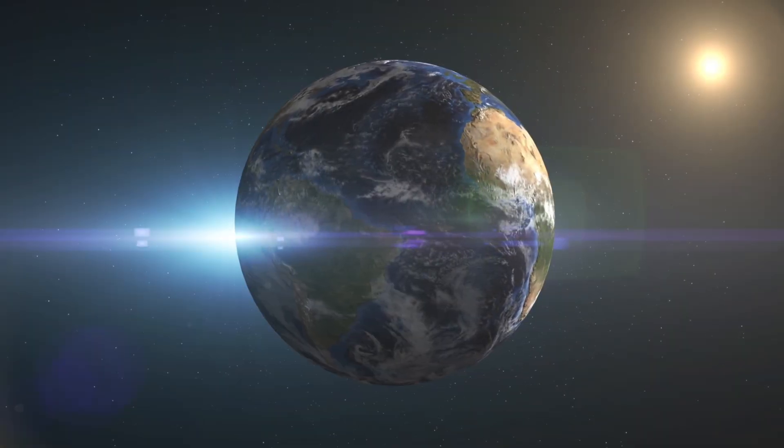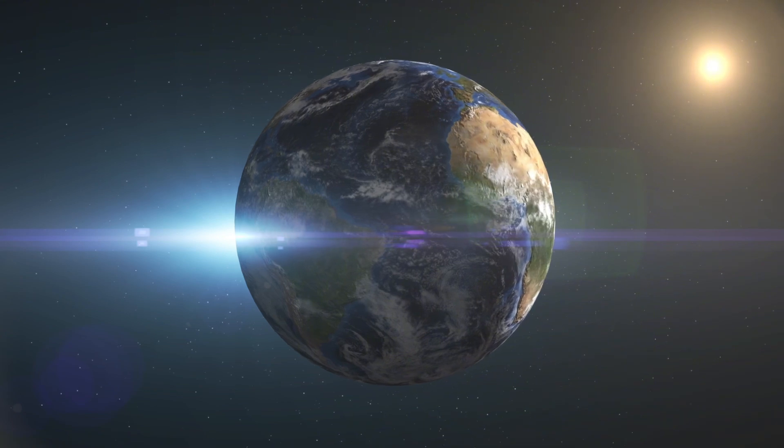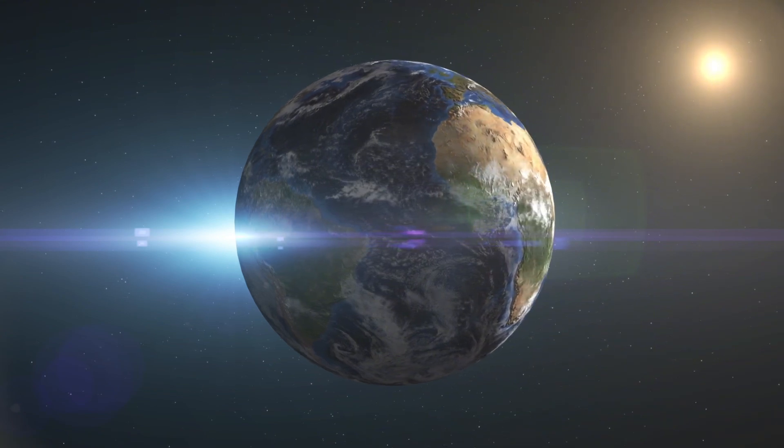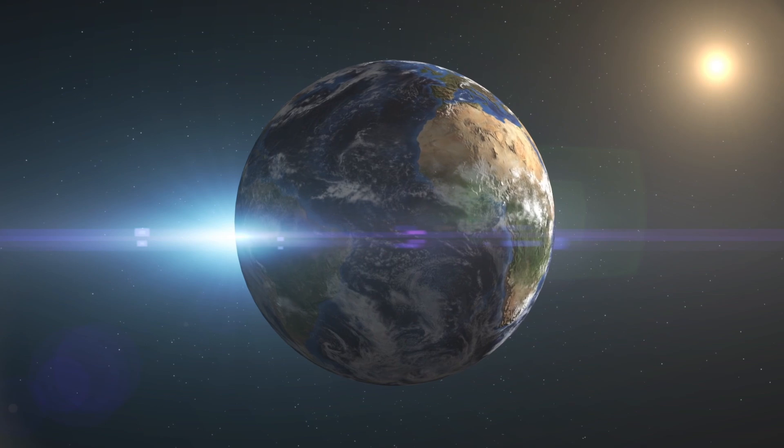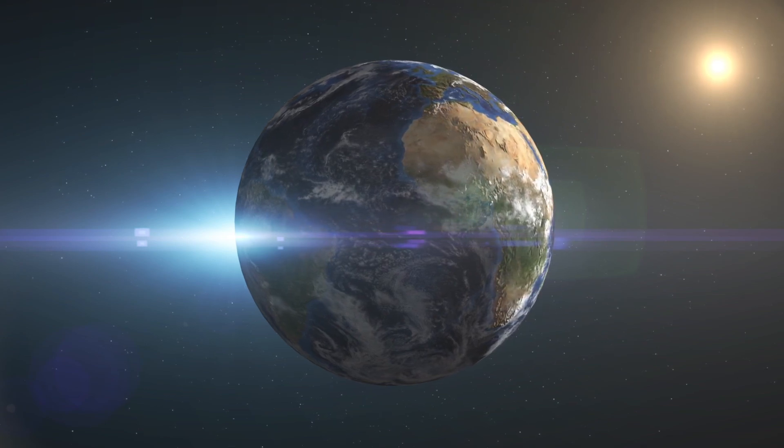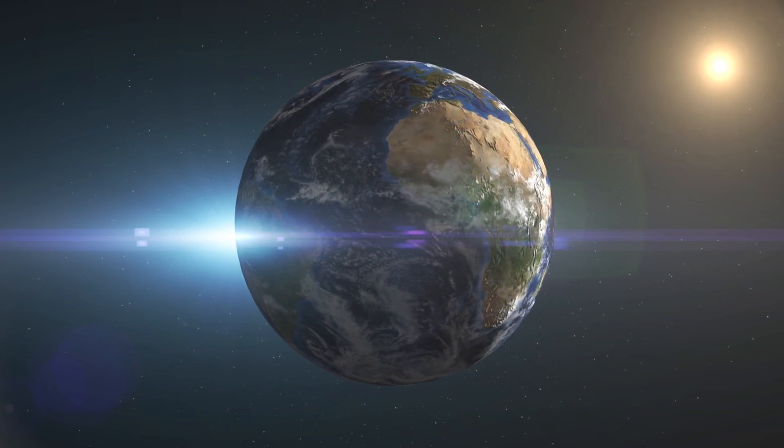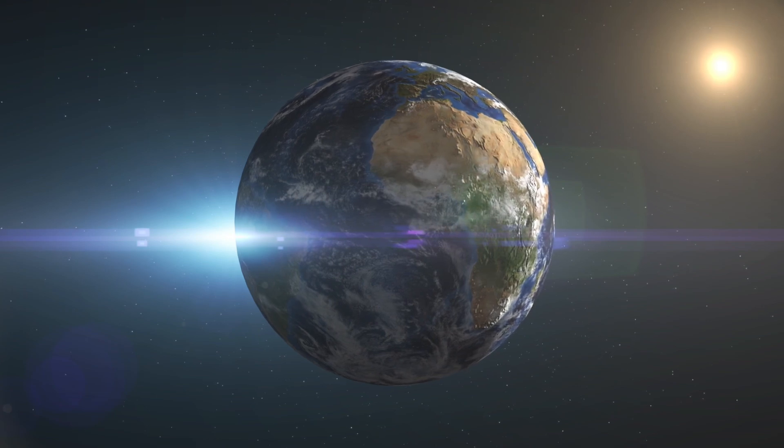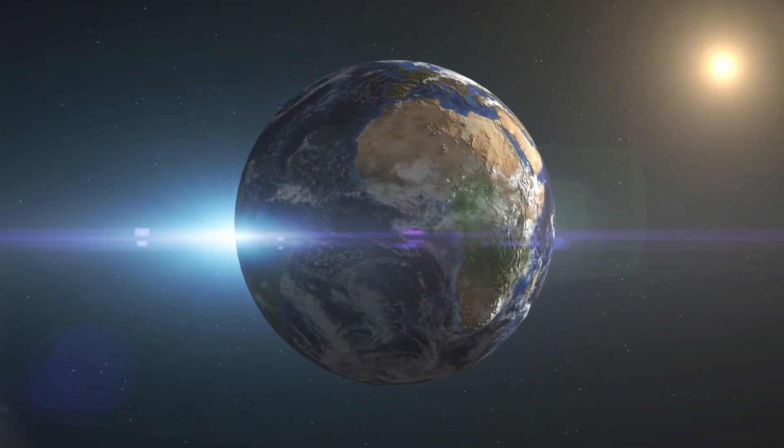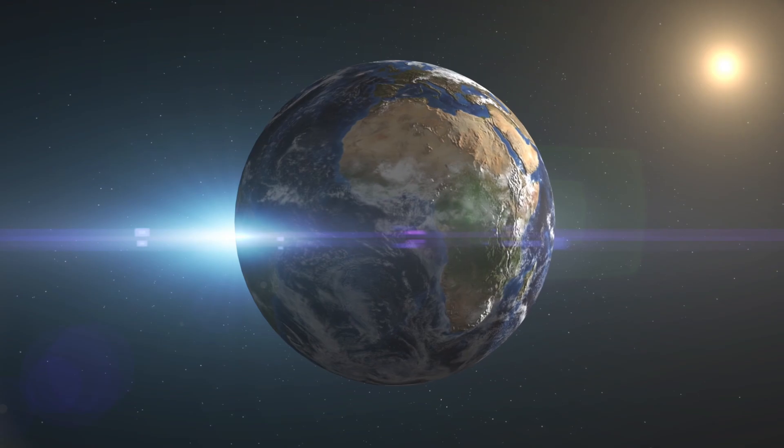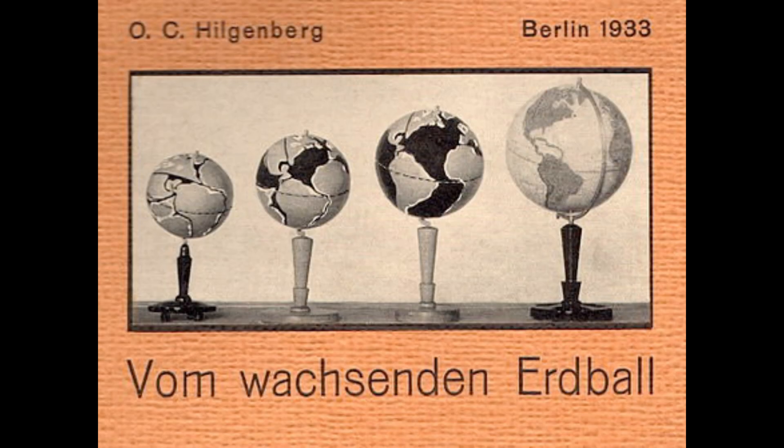The Expanding Earth Hypothesis, while ultimately rejected by mainstream science, has taken various forms throughout history, each with its own unique set of assumptions and explanations. One version suggests that the Earth's volume has been increasing over time while its mass has remained constant, implying that the Earth's density has been decreasing, a notion that challenges our understanding of the planet's composition and internal structure.